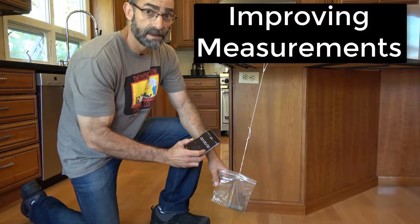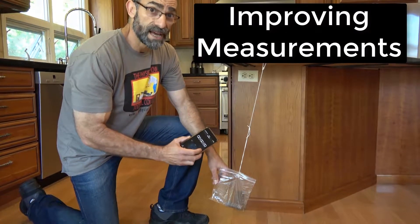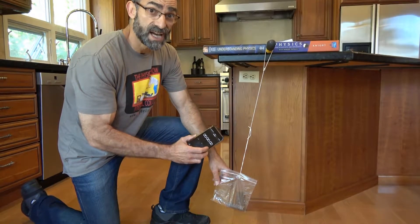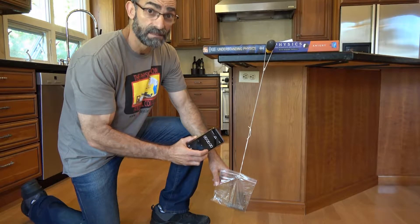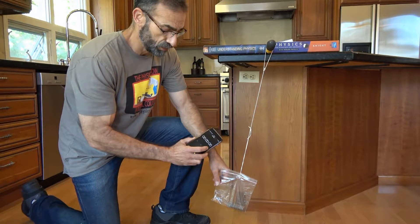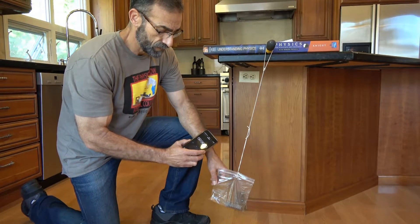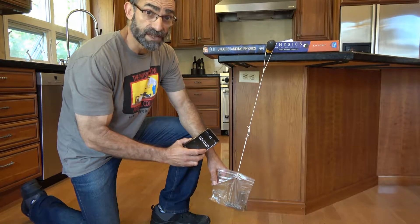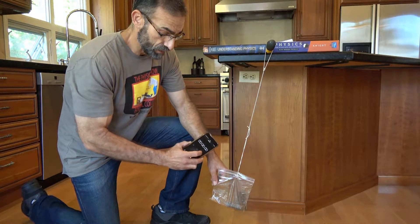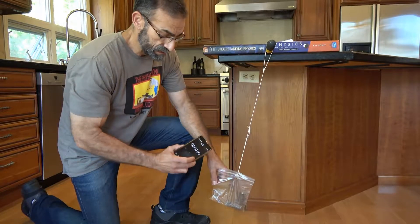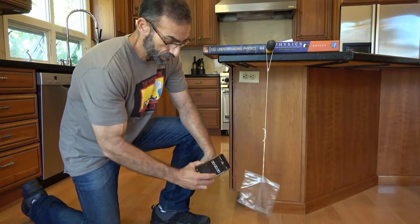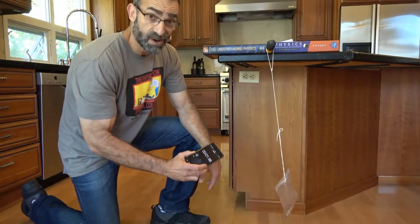We're measuring time, so what are all the factors that could change the time or make our measurement incorrect? How could we improve the measurement? One thing that a lot of people try to do is start the clock at the instant they let go of the pendulum, but that's hard to do.